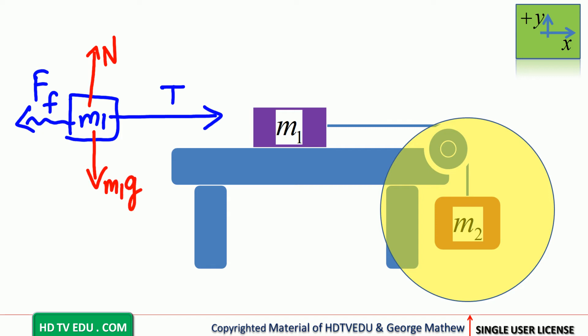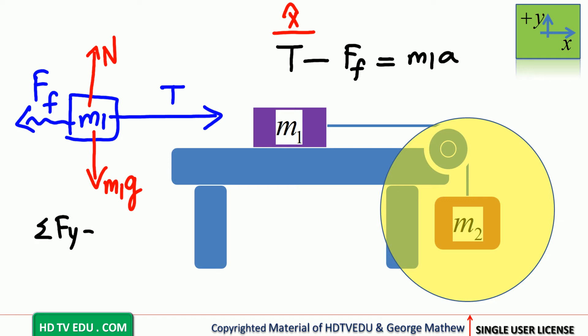The length of the tension arrow must be greater than the force of friction arrow because there is a net force and the mass is accelerating to the right. Along the horizontal: bigger force minus smaller force equals net force, so T minus Ff equals m1a. Along the vertical: net force is zero, so normal force equals m1g. These are the two equations of motion for mass m1.